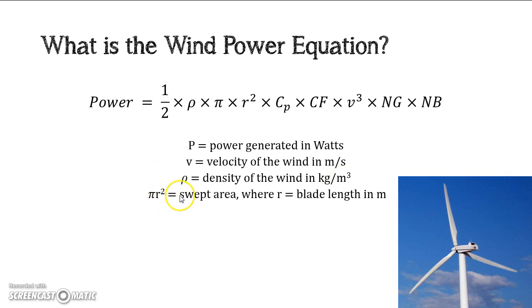And then pi r squared, which is the swept area. So that is the circular plane, the imaginary circle that the wind crosses. And so pi r squared is the area of a circle equation that we all learned in geometry class in high school, hopefully. Where r is the blade length in meters.